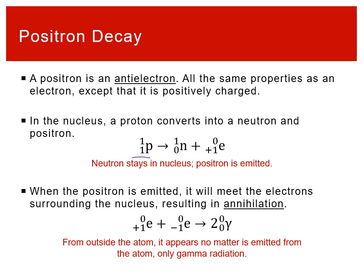A positron is a type of particle that is an anti-electron. It has all the exact same properties as an electron, except it is positively charged. The mechanism in the nucleus for how positron decay works is similar in idea to beta emission, except it's in reverse. You start with a proton in the nucleus. Those quarks and funny business get involved. You then produce a neutron that stays in the nucleus and a positron that leaves the nucleus. The neutron still has the mass, and the positron has that positive charge.